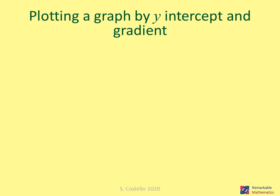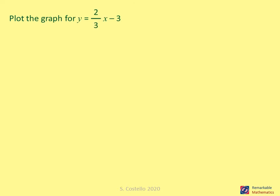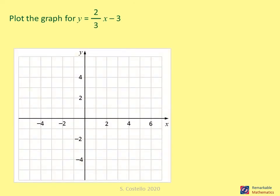Plotting a graph using the y-intercept and gradient. Given an equation in the form y equals mx plus c, the graph can be plotted by first marking the y-intercept on the y-axis, then using the gradient to find another point on the line. For example, plot the graph of y equals two over three x minus three.